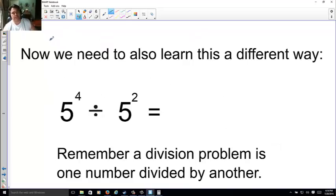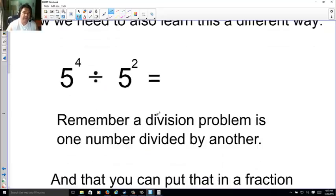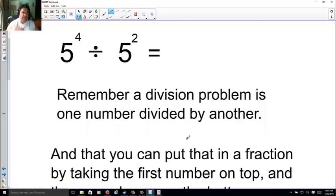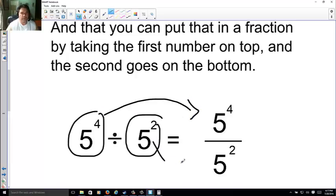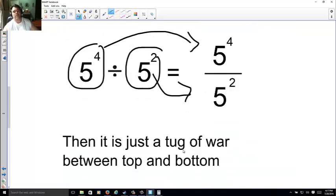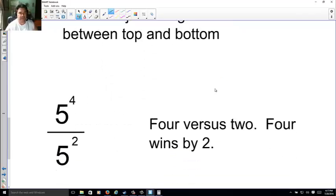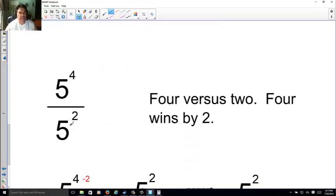Now, we also need to learn this in a different way, because there's a second way to do this. Instead of just taking 4 minus 2, which admittedly is an easy way, there is a reason why I'm going to show you a second way. That a division problem is one number divided by another. And you can put that into a fraction, with the first number going on top, the second number going on the bottom. So, shown here. 5 to the 4th is what we got. 5 to the 2nd is what we're dividing by.